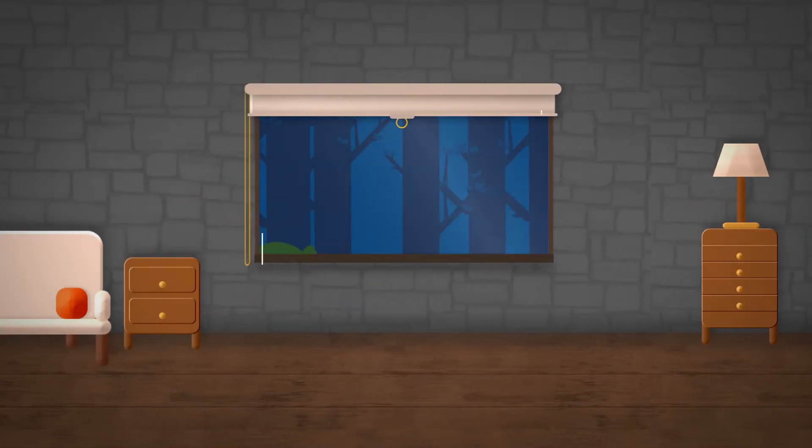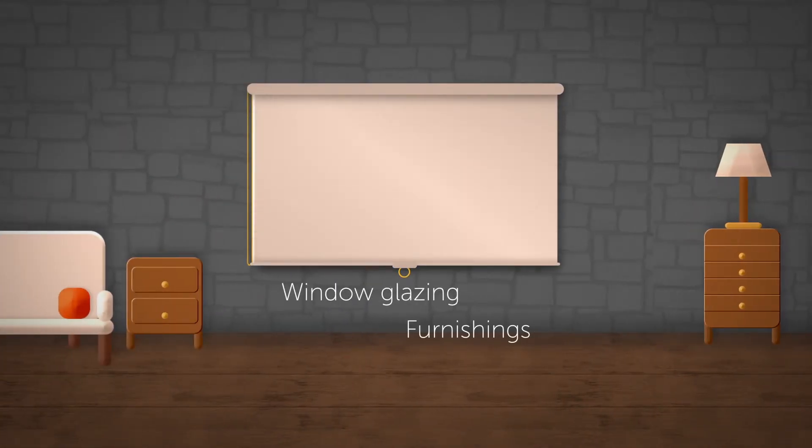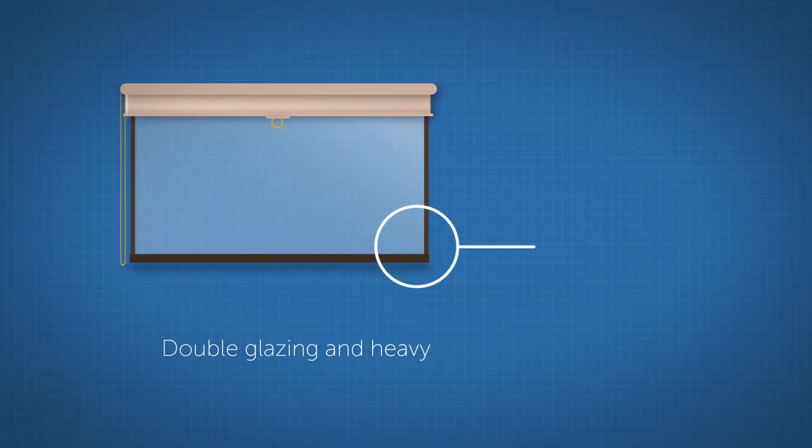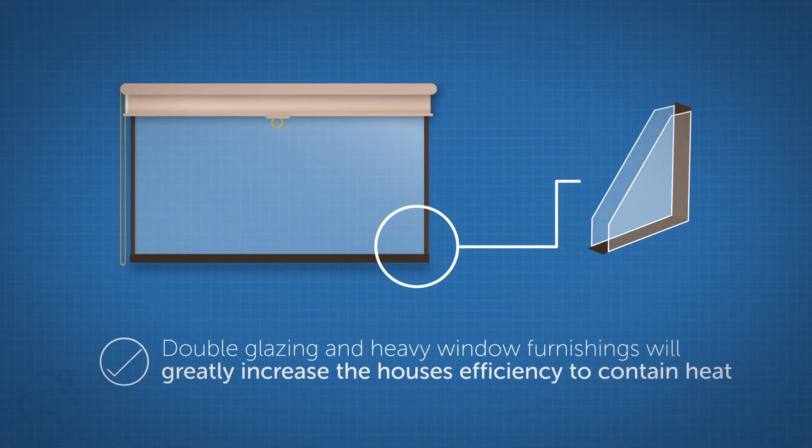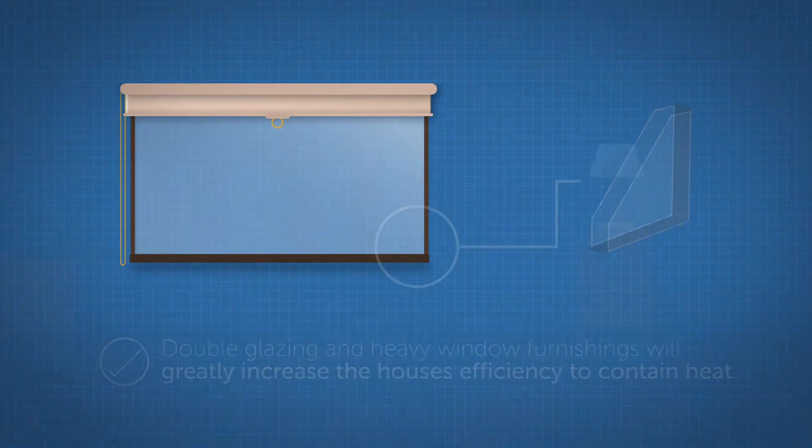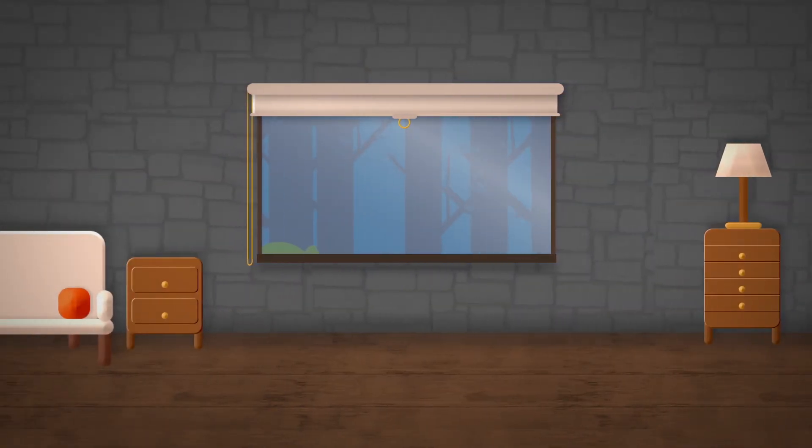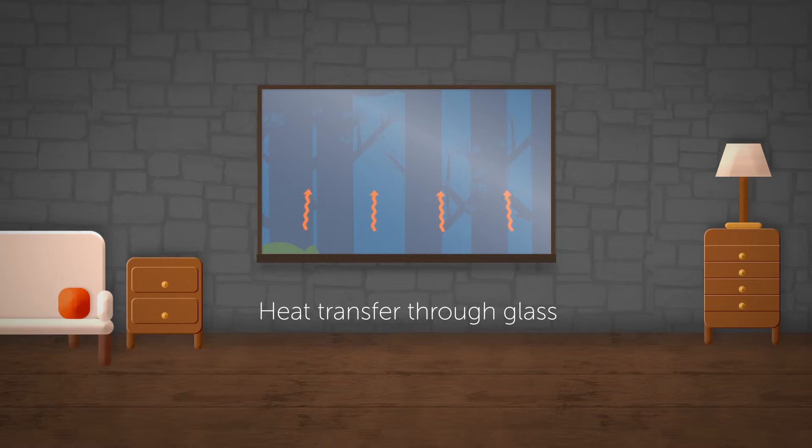Window glazing and furnishings are also important to calculate the amount of heat loss from the dwelling. Double glazing and heavy window furnishings will greatly increase the house's efficiency to contain heat. Windows without curtains or blinds will leak warmth via heat transfer through the glass.